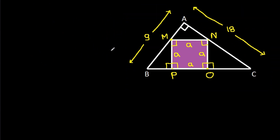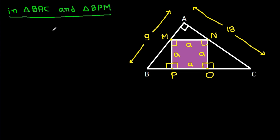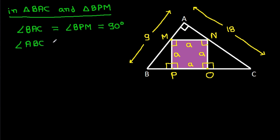Now in triangle BAC and triangle BPM, we have angle BAC is equal to angle BPM, that is 90 degrees. And angle ABC is equal to angle PBM, that is common.